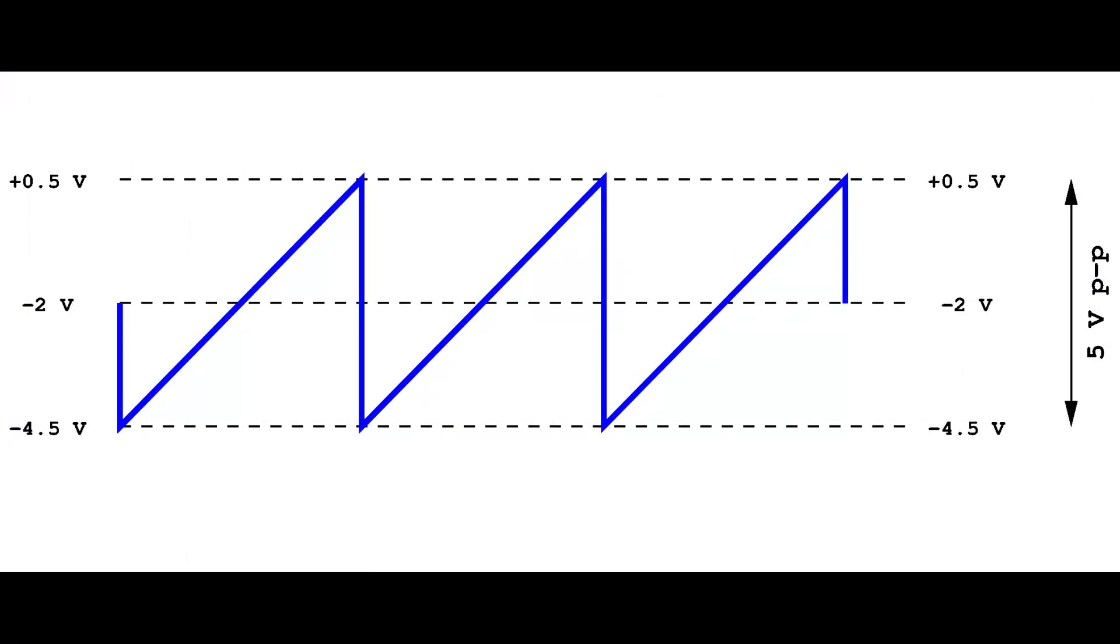The plan is to apply to the grid of this tube a sawtooth signal of 5 volts peak to peak, oscillating between minus 4.5 and 0.5 volts, therefore with an average voltage of minus 2 volts.